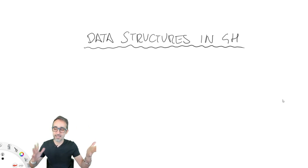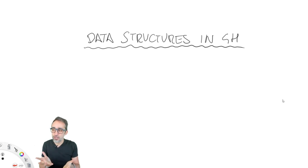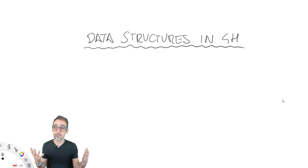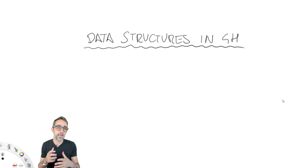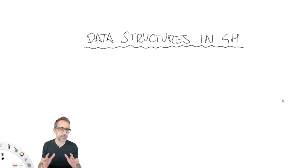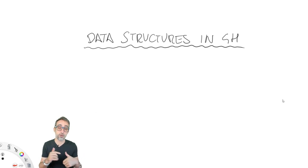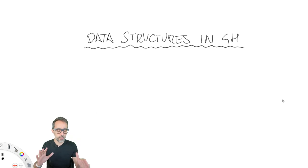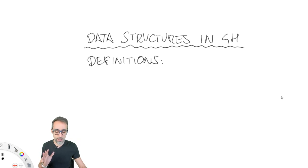Hi, this is Jose Luis, and welcome to another video on the introduction to parametric modeling series where I'm going to talk about what data structures are inside of Grasshopper. If you remember from the previous video, I did an example where we were trying to model something, but the result was not exactly what we wanted. So make sure you check that video to understand the context. Before I figure out the solution, I wanted to run some definitions about how data is handled inside of Grasshopper.